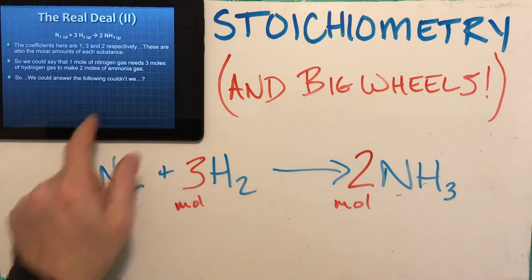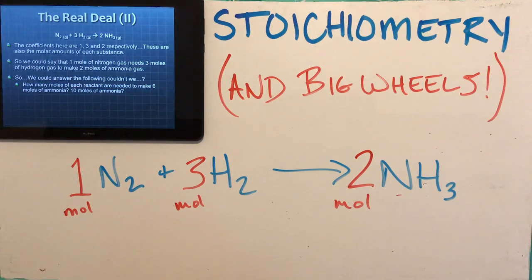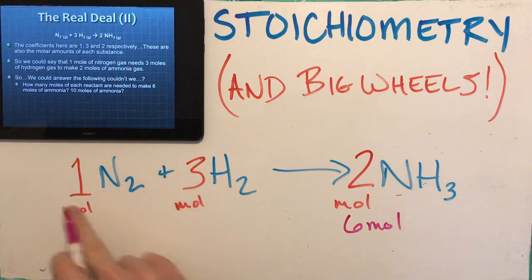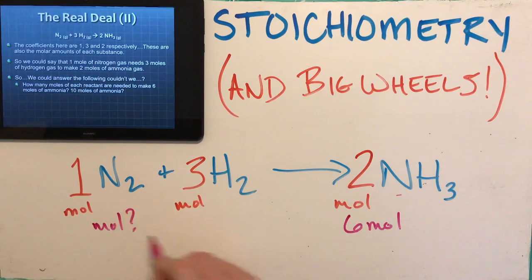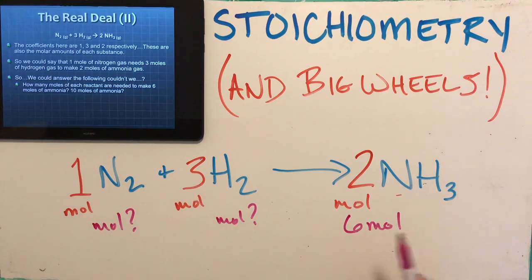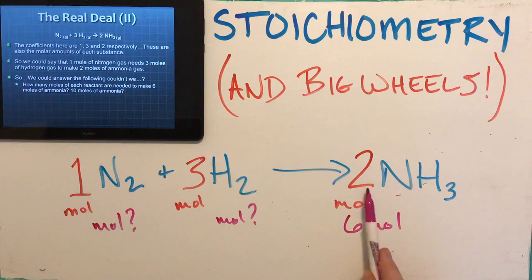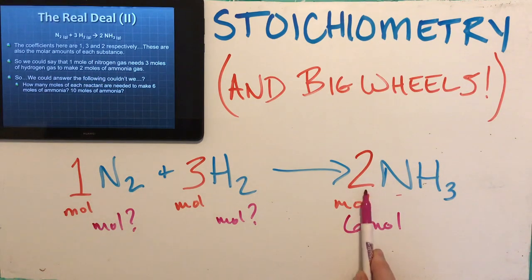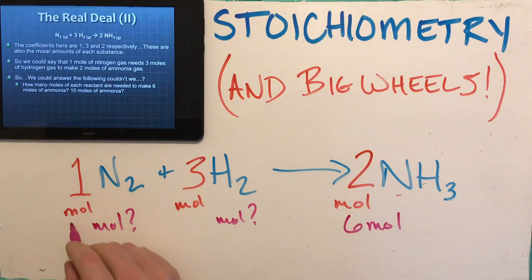So we could answer: how many moles of each reactant are needed to make six moles of ammonia? If I need six moles of NH₃, how many moles of N₂ and H₂ would I need? The relationship between nitrogen and ammonia is one to two — whatever ammonia is, nitrogen is half. So if ammonia is six, nitrogen is three. The relationship between nitrogen and hydrogen is one to three — whatever nitrogen is, hydrogen is three times larger. So three moles of nitrogen means nine moles of hydrogen.